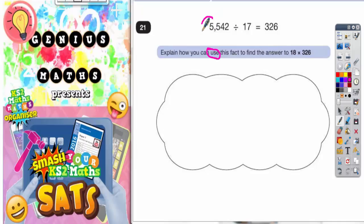Well, any time you've got a division sum that looks like this, you can come up with other sums using this same fact. So, if 5,542 divided by 17 equals 326, it is also true to say that 5,542 divided by 326 would give you 17.